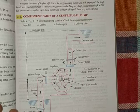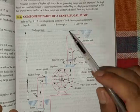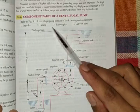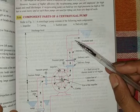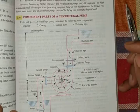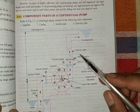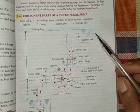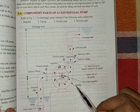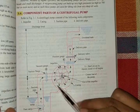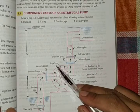First, let's try to understand the main components of a centrifugal pump — that is, impeller, casing, suction pipe, and delivery pipe. This is the block diagram of a centrifugal pump where the main components are shown. This portion is your casing, which is spiral in nature, and inside the casing you will find the impeller.